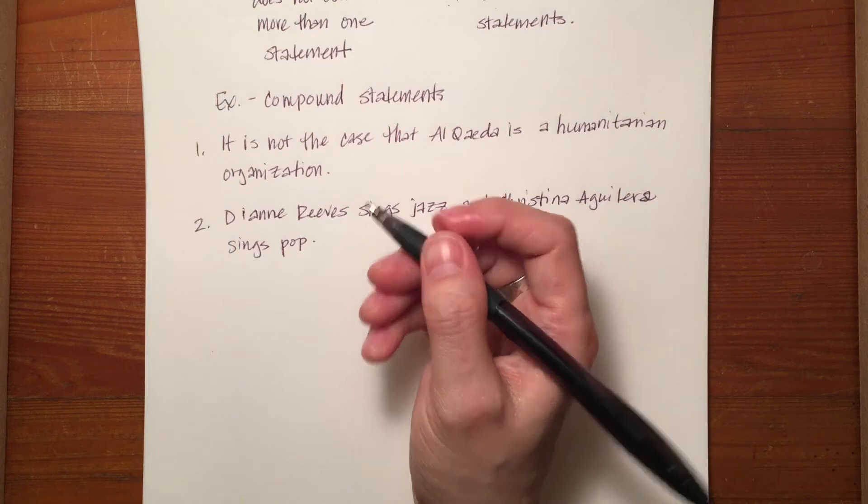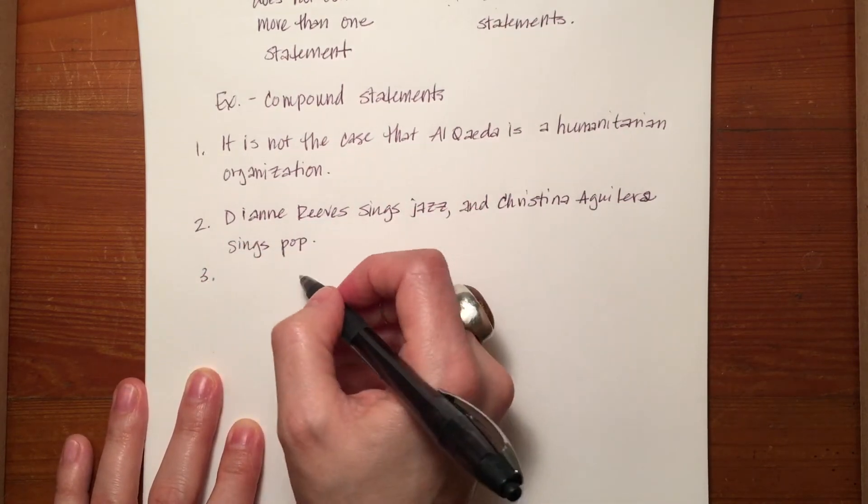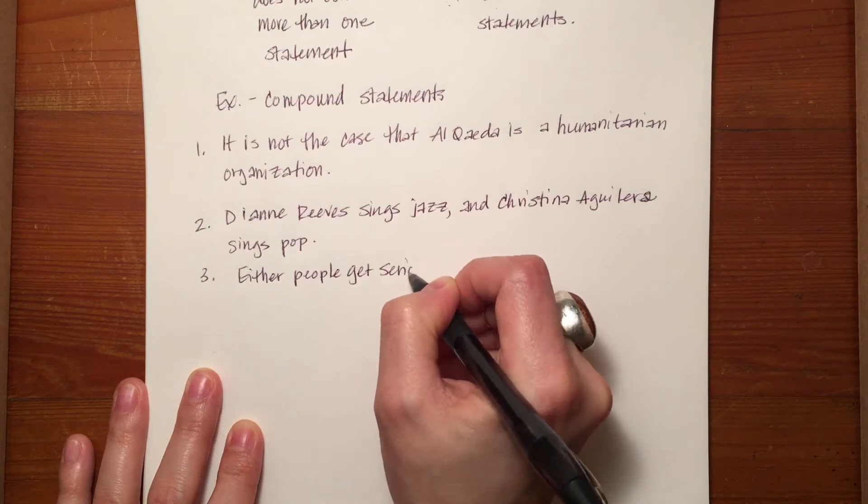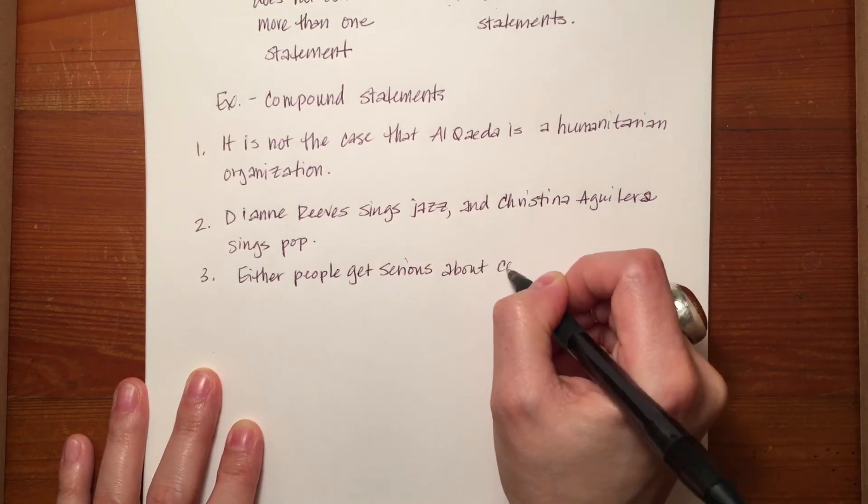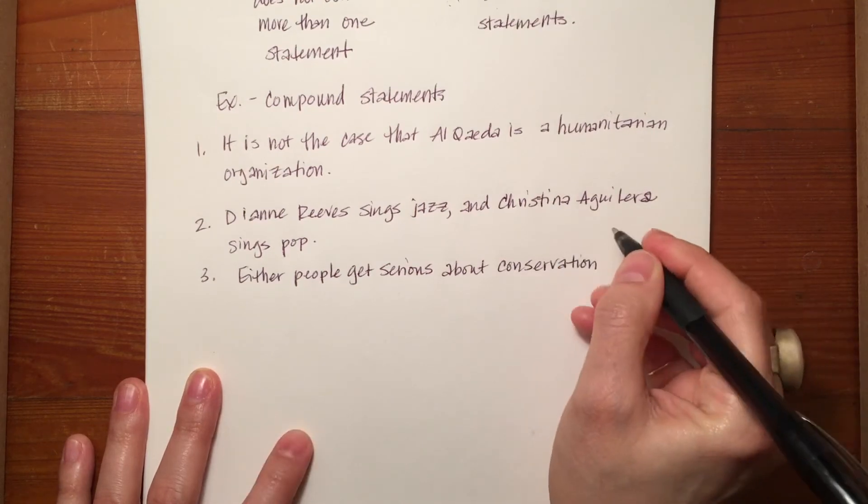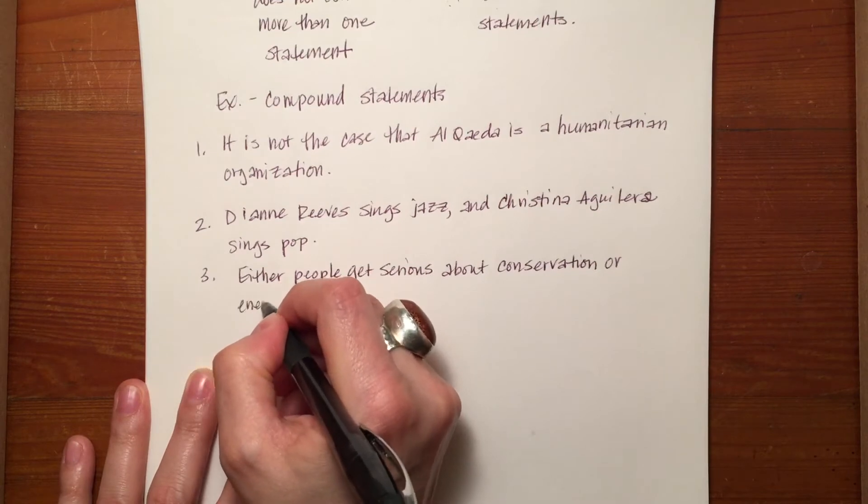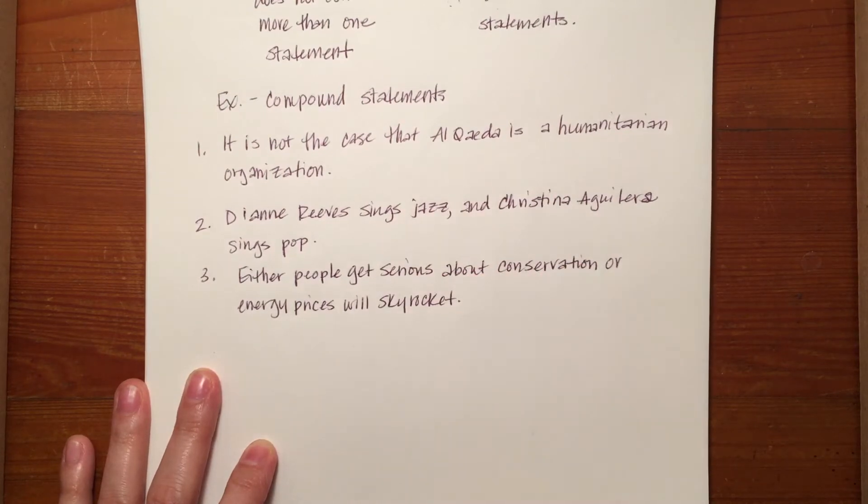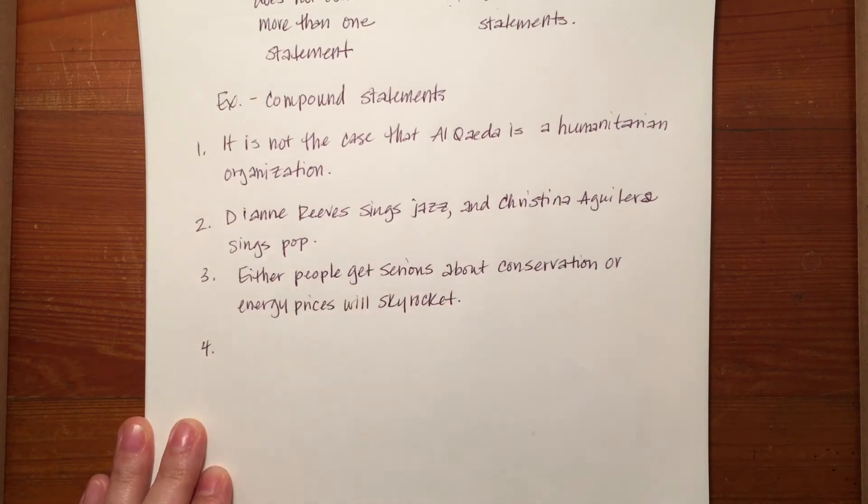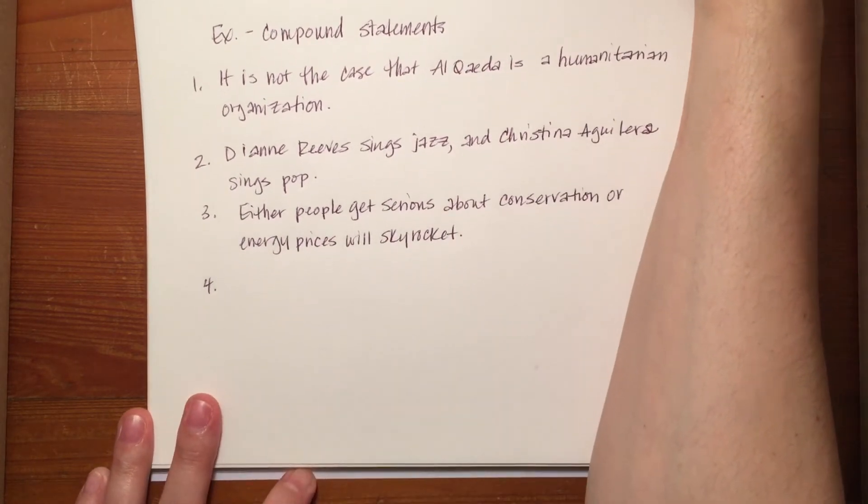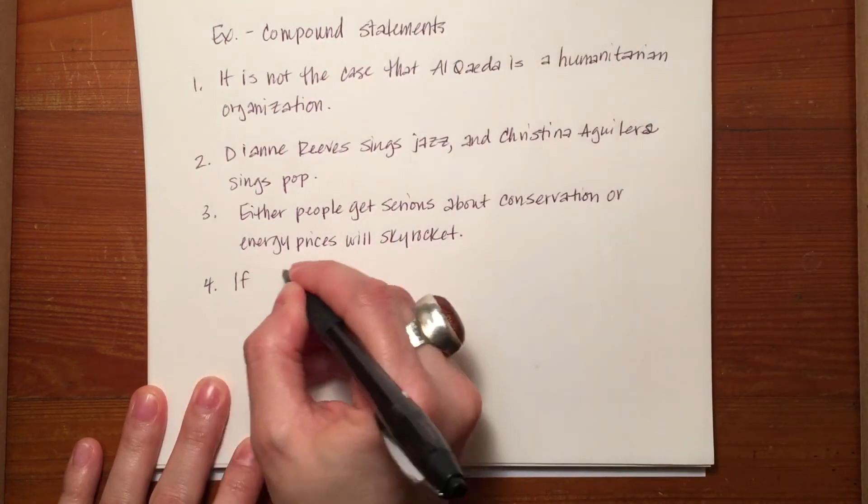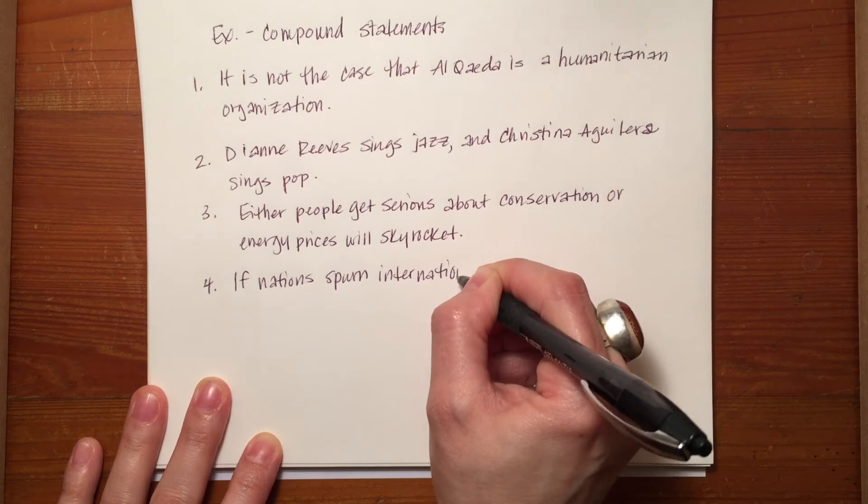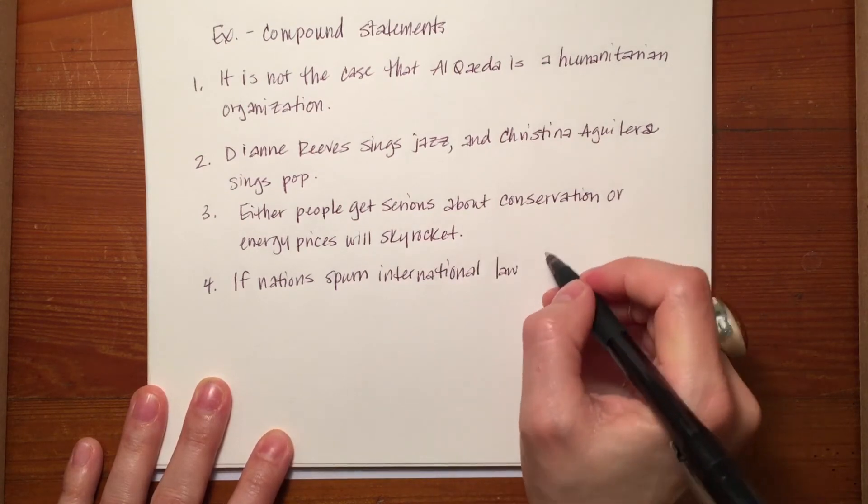I'll give you three more examples. Number three, either people get serious about conservation or energy prices will skyrocket. The fourth one that we'll look at is if nations spurn international law, then future wars are guaranteed.